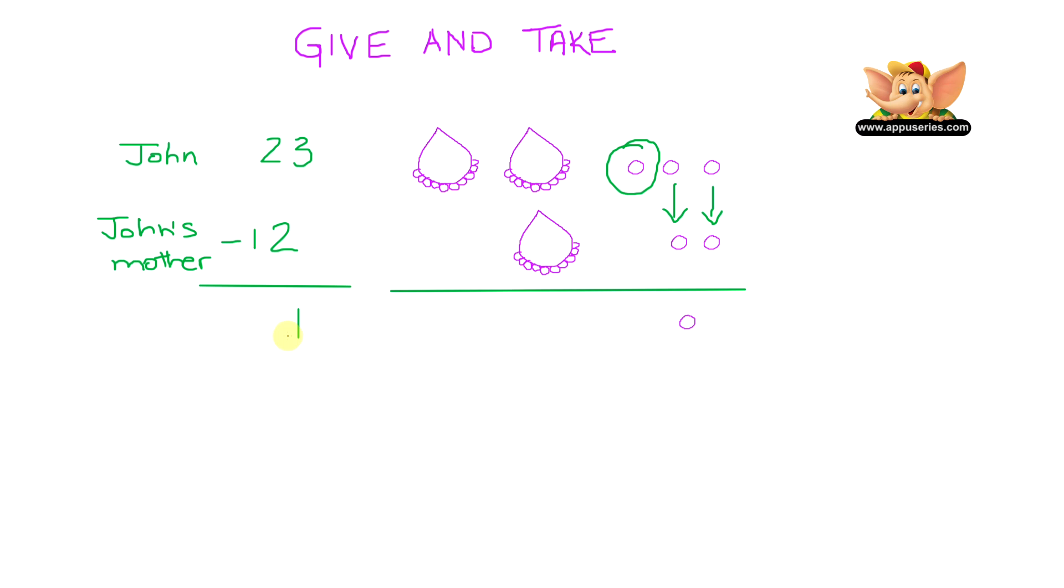Let's move on to the necklaces. We know that he had 2. So if he gives away 1, that leaves him with just 1 necklace. So 2 minus 1 equals 1. So now, he only has 11 pearls.